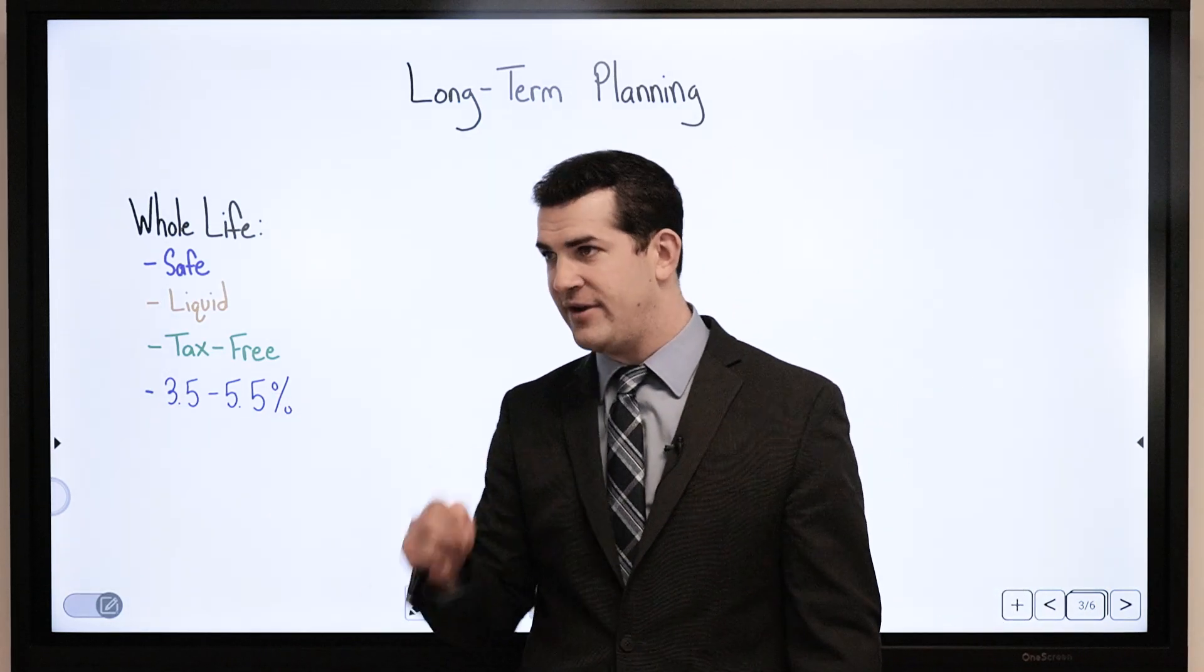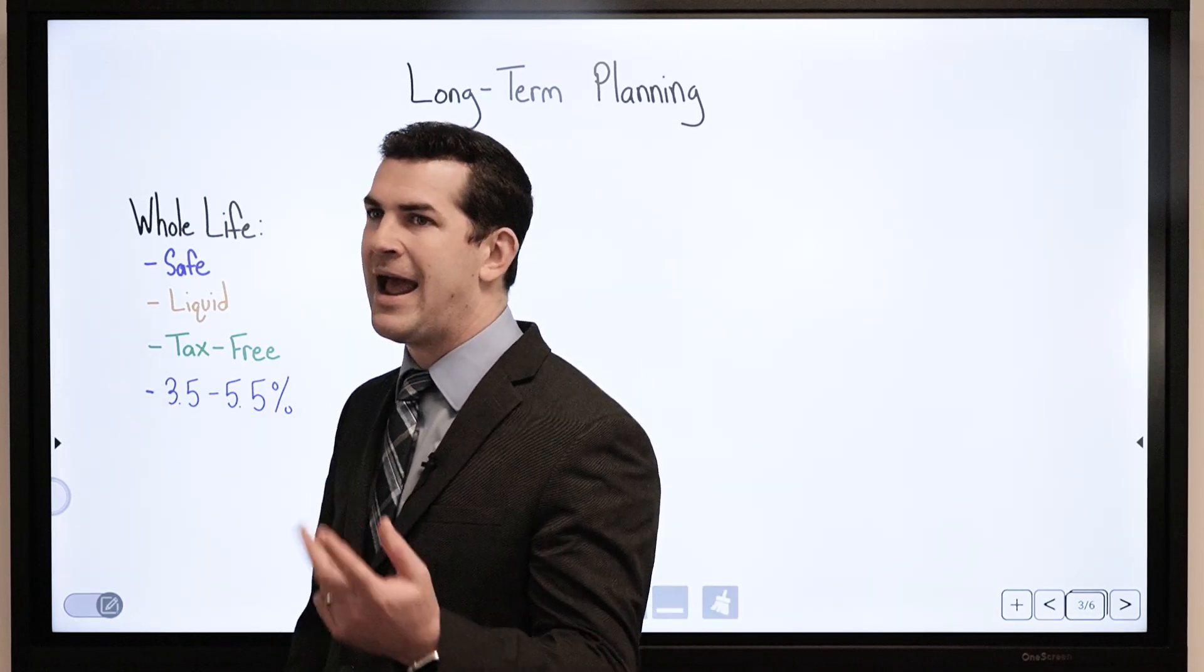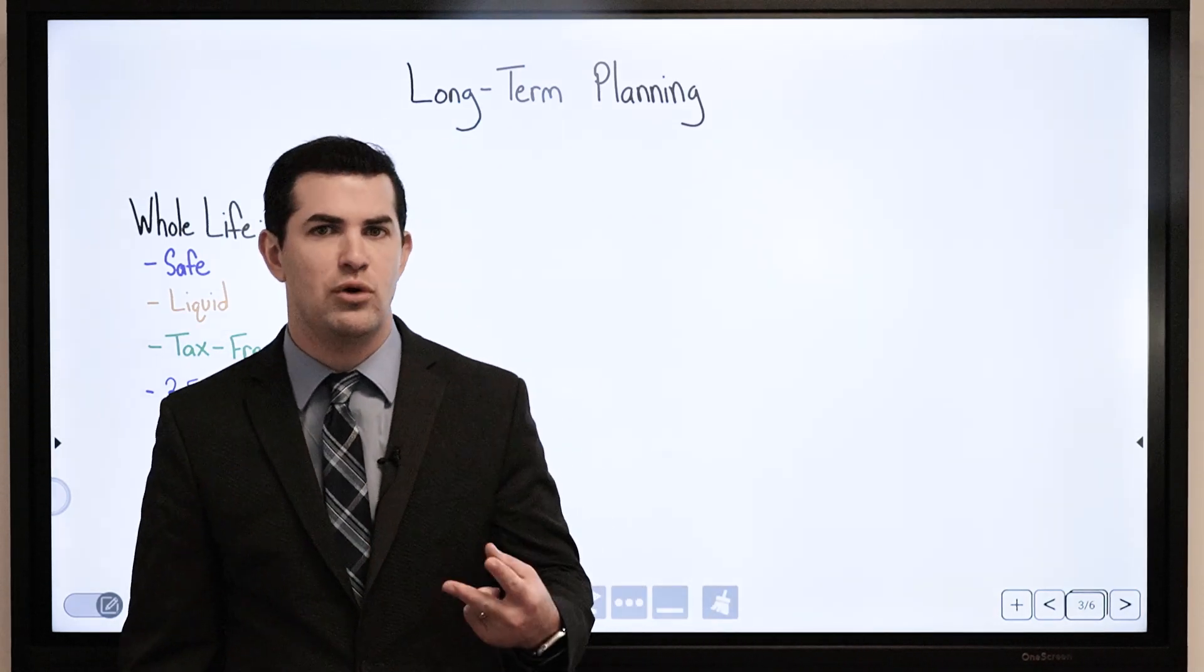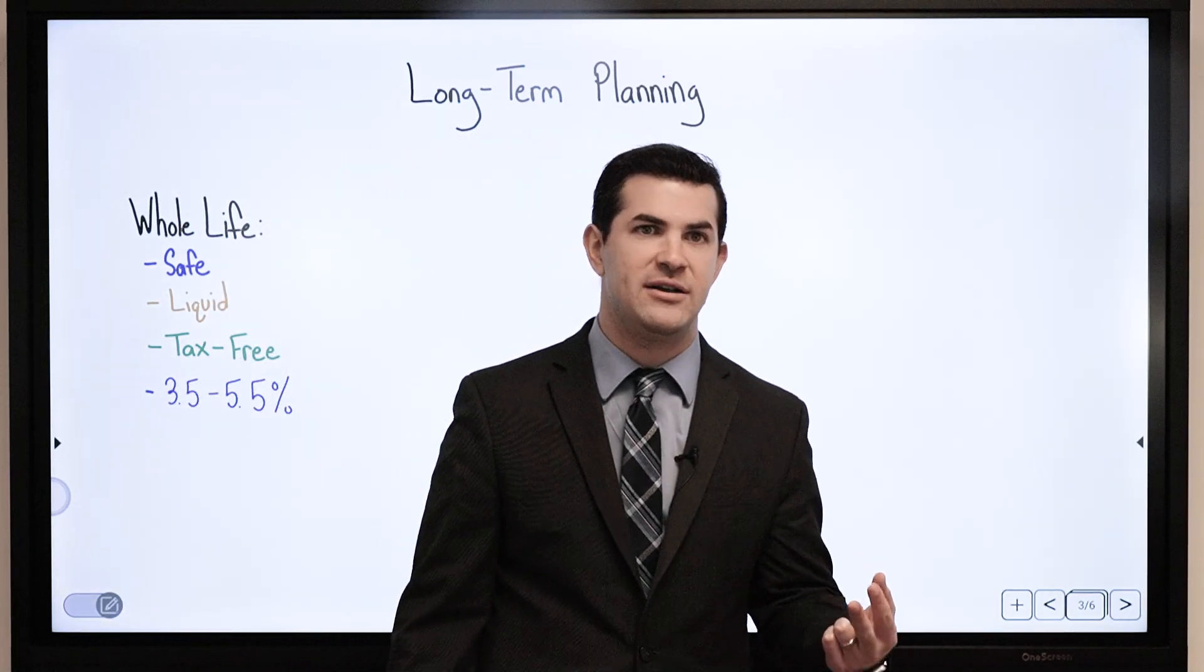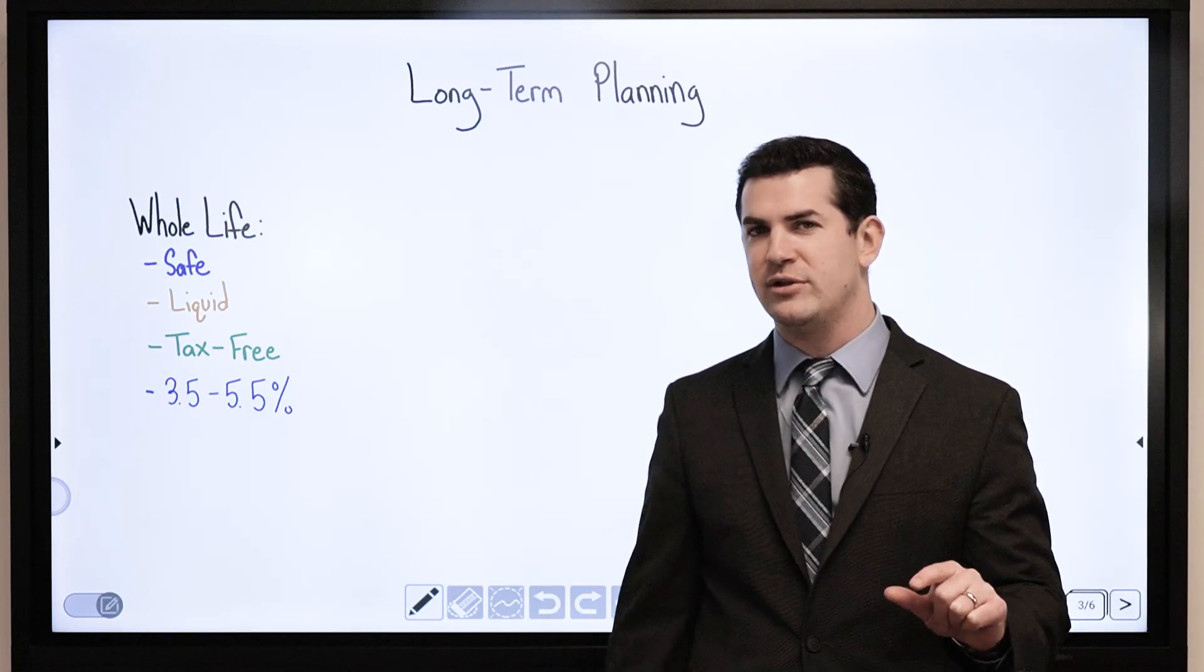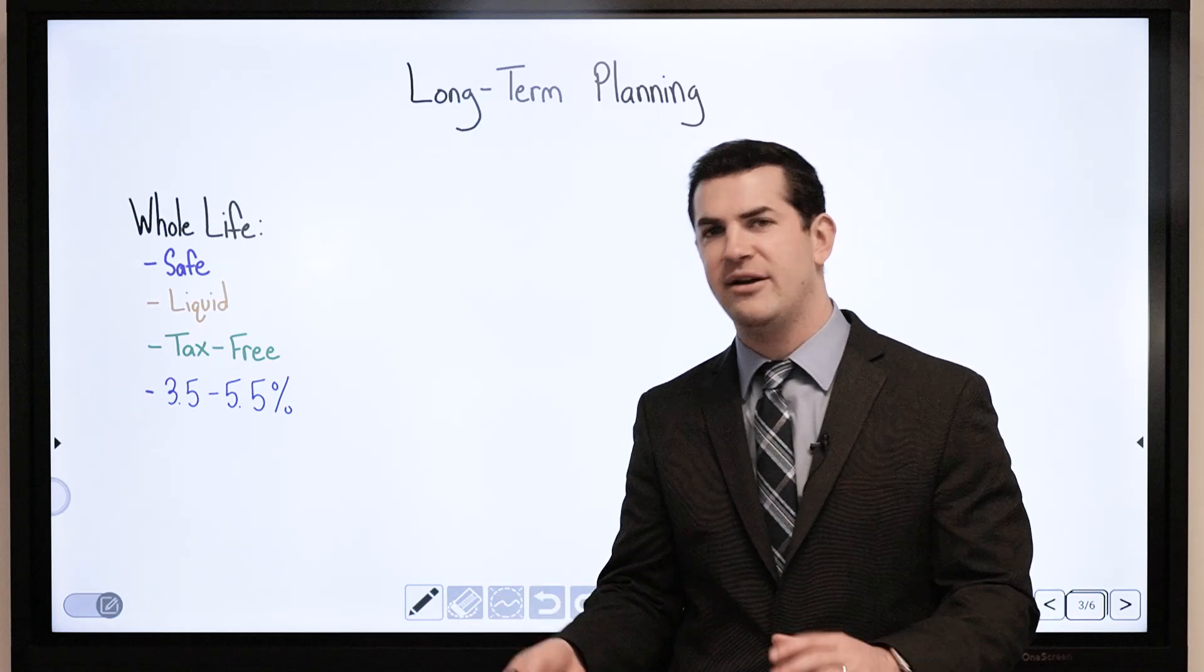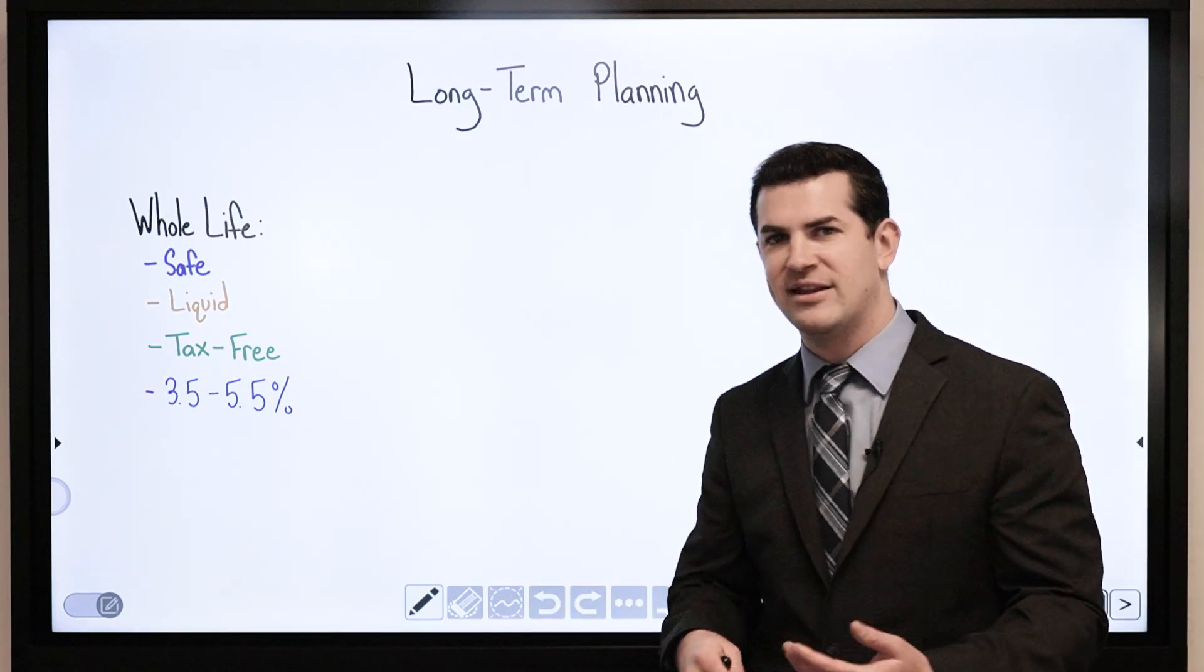That 3.5% to 5.5% range has to be with one of the top companies and designed properly. A lot of times I've seen policies that produce between 1% and 2%. The design's the big culprit there. If it's not designed for maximum cash value, it's more weighted towards the death benefit.